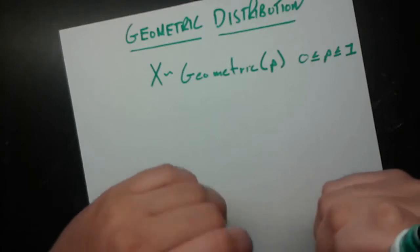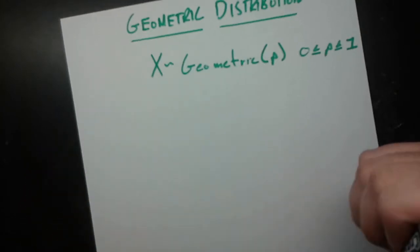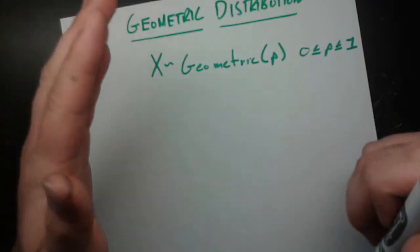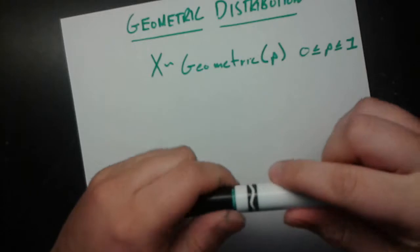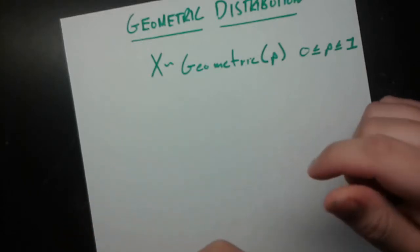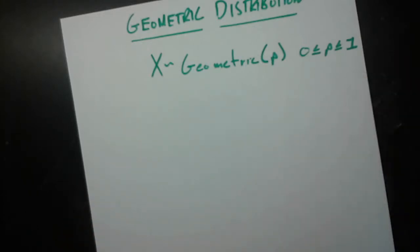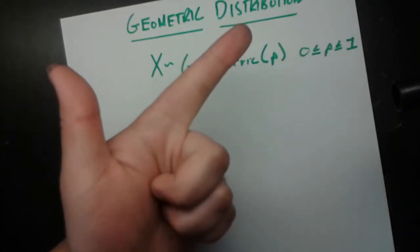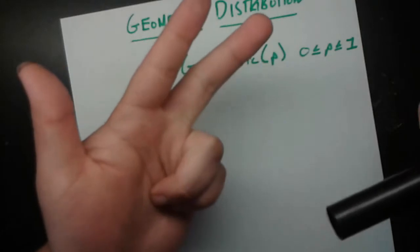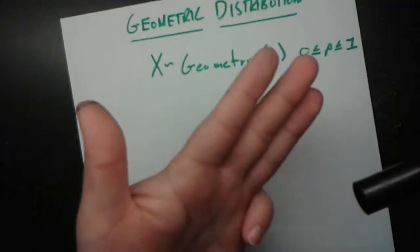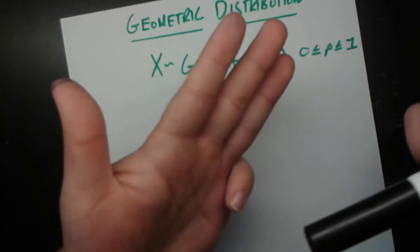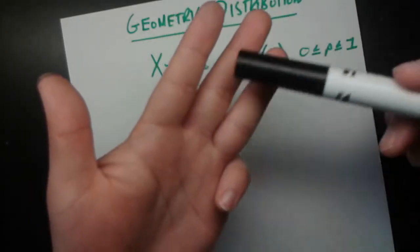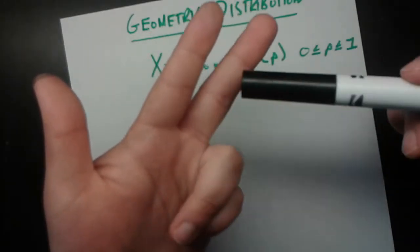X is going to measure how many cars have to go by before we see our first white car. For example, if a red car passes — that's 1 — another red car — that's 2 — another red car — that's 3 — and then a white car, that's 4, so X equals 4. It is the number of trials up until we get a success, and remember to count that last trial.